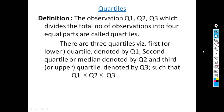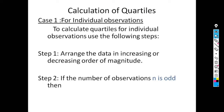Next topic is the calculation of quartiles. The observations Q1, Q2, Q3 which divide the total number of observations into four equal parts are called quartiles. We can calculate quartiles for three types of data. For individual observations, the approach depends on whether n is odd or even. The first step is to arrange the data in increasing or decreasing order of magnitude.